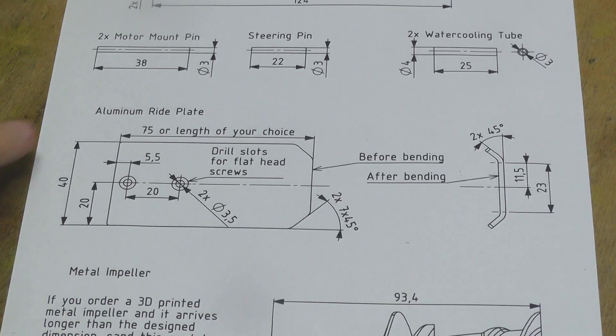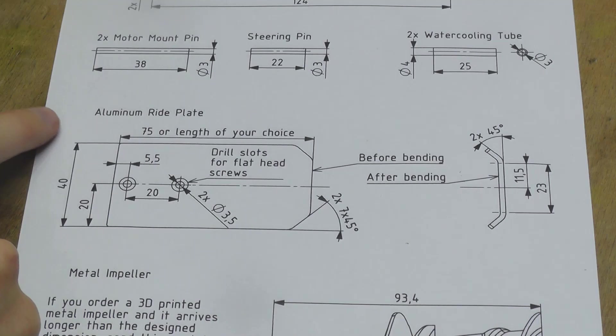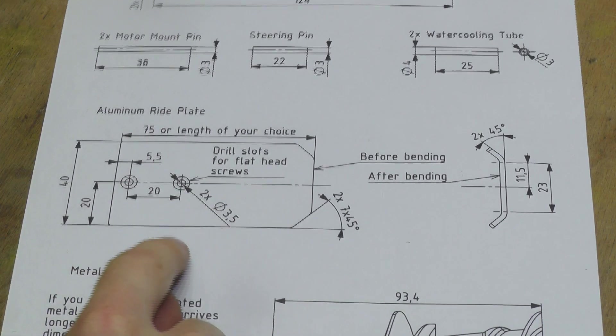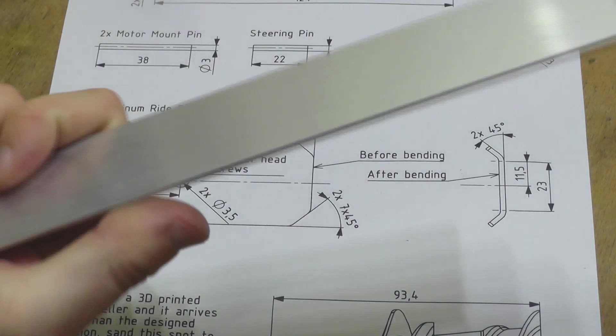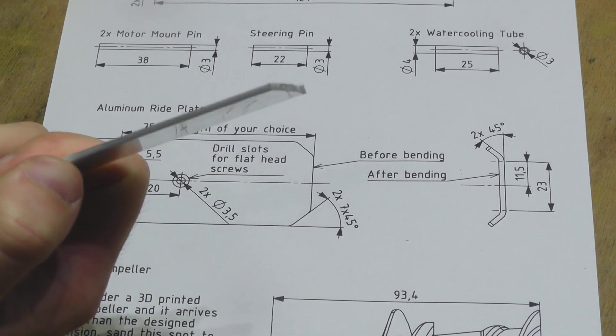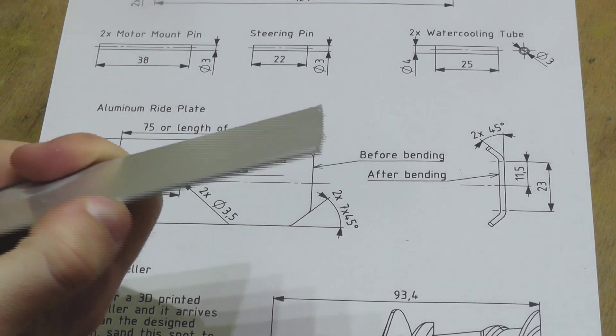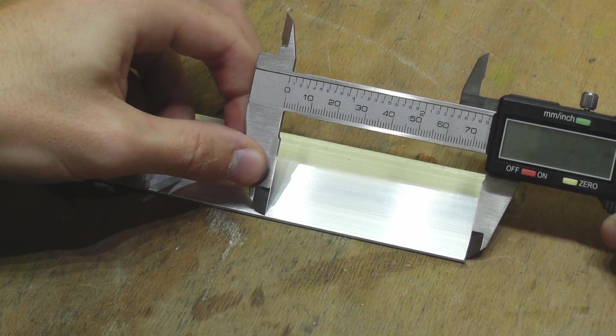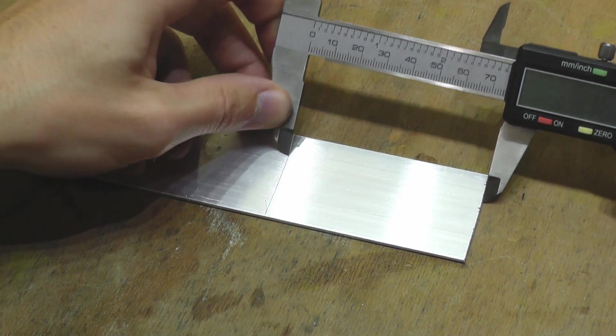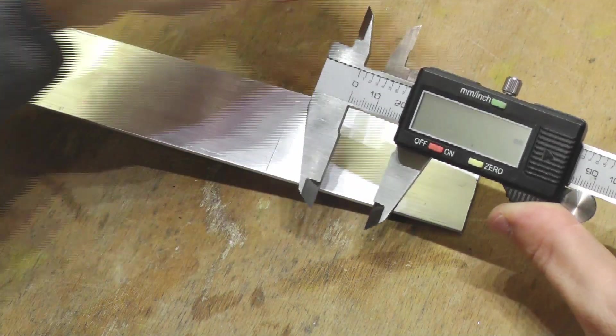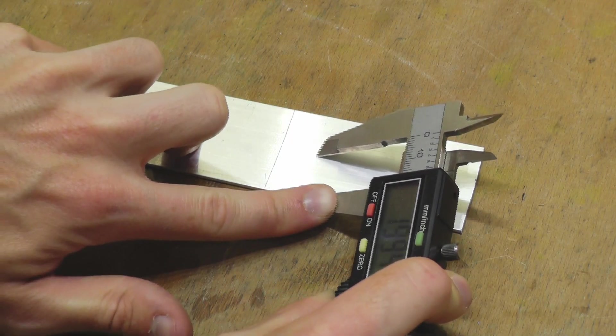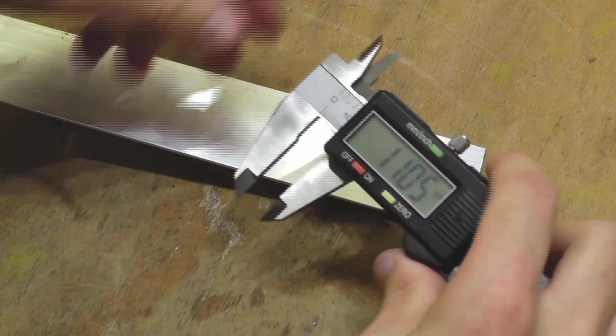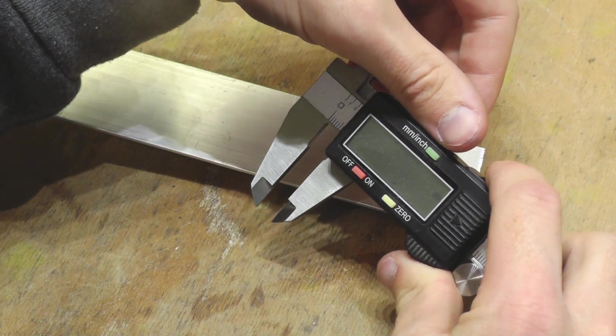Now I will move on and create the aluminum right plate. You can either get this shape laser cut or you can cut it from a 40x2mm aluminum profile. And this is quite easy. I will show you how I do it. So at first measure 75mm. Now I will measure 20mm to get a center line. And I will also cut a chamfer in the corners.